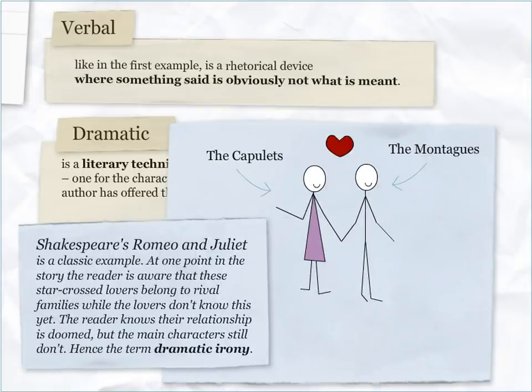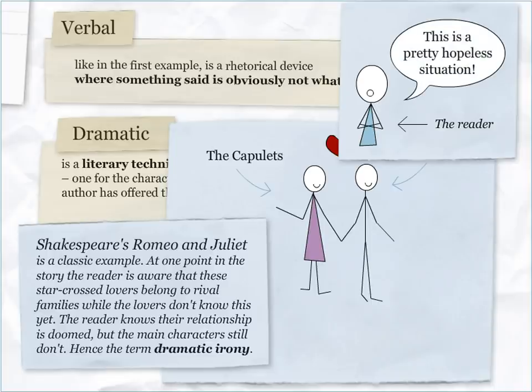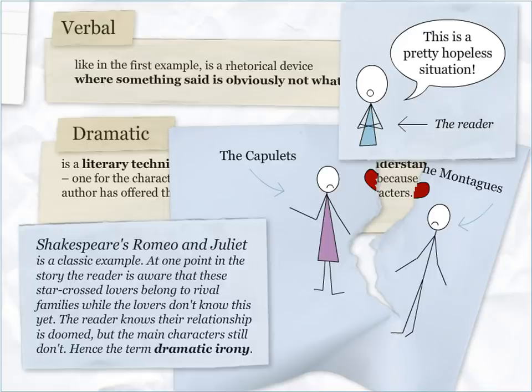Shakespeare's Romeo and Juliet is a classic example. At one point in the story, the reader is aware that these star-crossed lovers belong to rival families. While the lovers don't know this yet, the reader knows that their relationship is doomed, but the main characters still don't — hence the term dramatic irony.